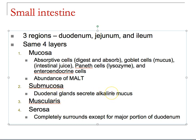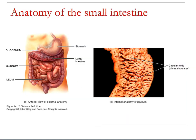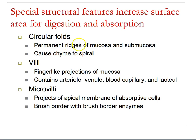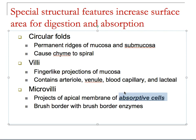Here's the small intestine — inside we have circular folds called the plica circularis, and the significant thing is the enormous surface area. Those circular folds are made of mucosa and submucosa and cause the chyme to spiral, creating a churning mixture that increases movement so materials flow over the finger-like projections of mucosa called villi.